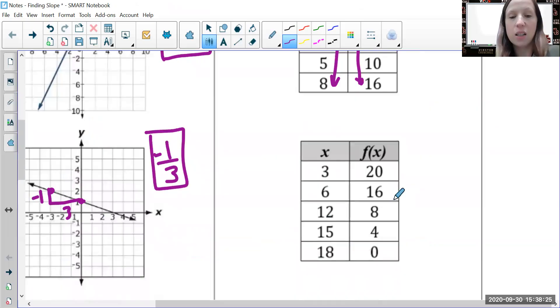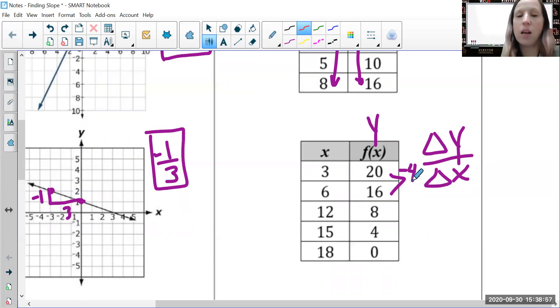In this next table, the x's are getting bigger but the y's keep getting smaller: 20, 16, 8, 4, 0. We're finding the change in y's divided by change in x's. The y's, from 20 to 16, decrease by four. From three to six, that's an increase of three. The y's go on top, so negative four over positive three equals negative four-thirds.